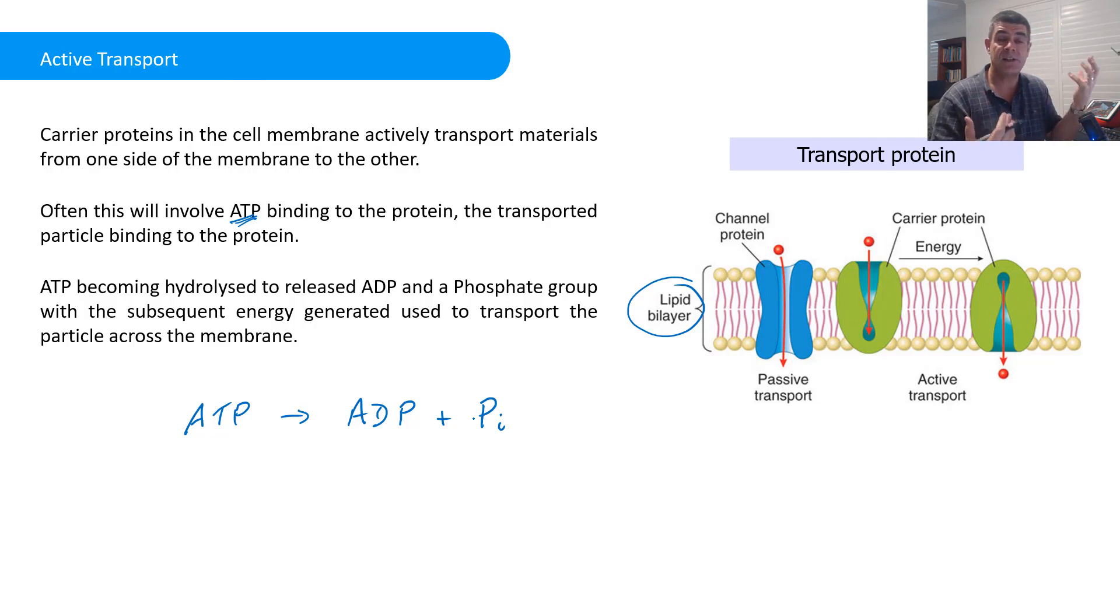So this is the energy currency that's used to transport particles across the membrane. And of course, in order to rebuild this process again, we need that energy from glucose from respiration in order to rebuild our ATP molecules so they can be used for similar sorts of processes.